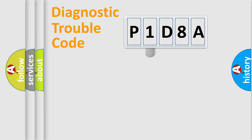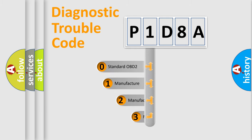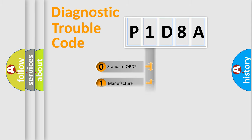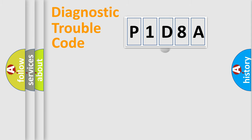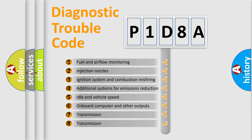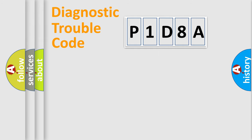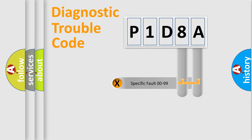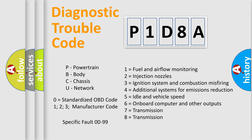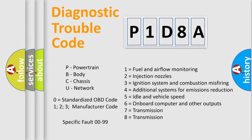This distribution is defined in the first character of the code. If the second character is expressed as zero, it is a standardized error. In the case of numbers 1, 2, or 3, it is a more specific expression of a car-specific error. The third character specifies a subset of errors. The distribution shown is valid only for the standardized DTC code. Only the last two characters define the specific fault of the group. Such a division is valid only if the second character code is expressed by the number zero.